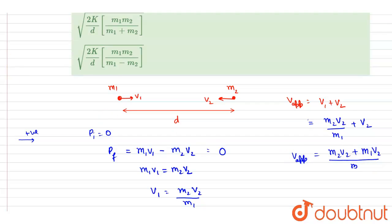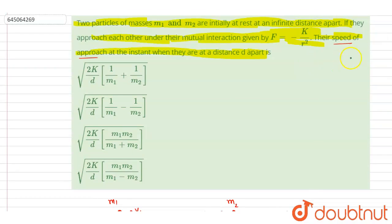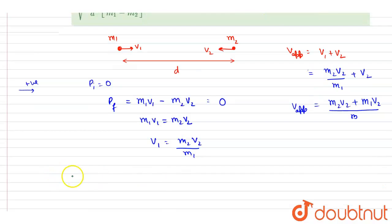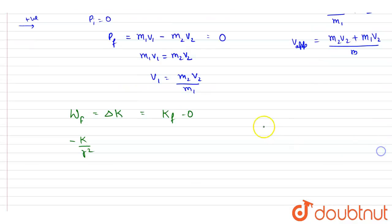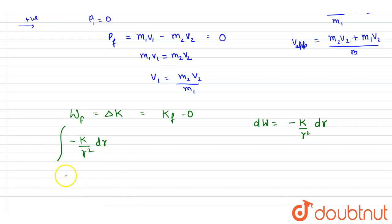The force is minus k by r square. Applying the work-energy theorem, the only force doing work is this mutual force. The initial kinetic energy was zero, so work done equals the final kinetic energy. Since the force varies with distance, the small work done is integrated as the distance between them changes from infinity to d.